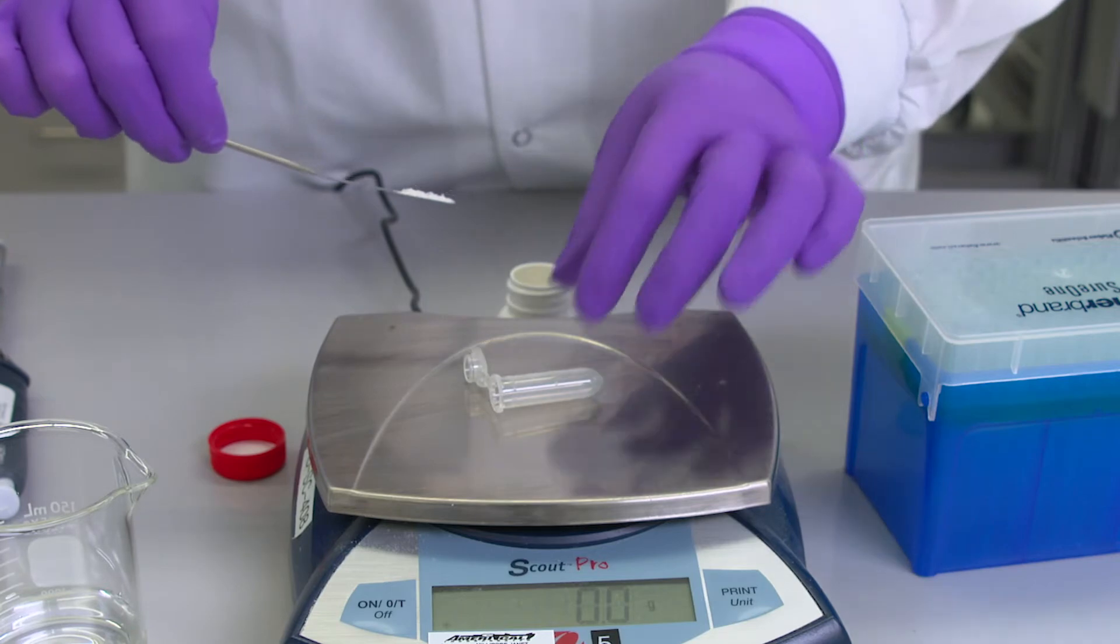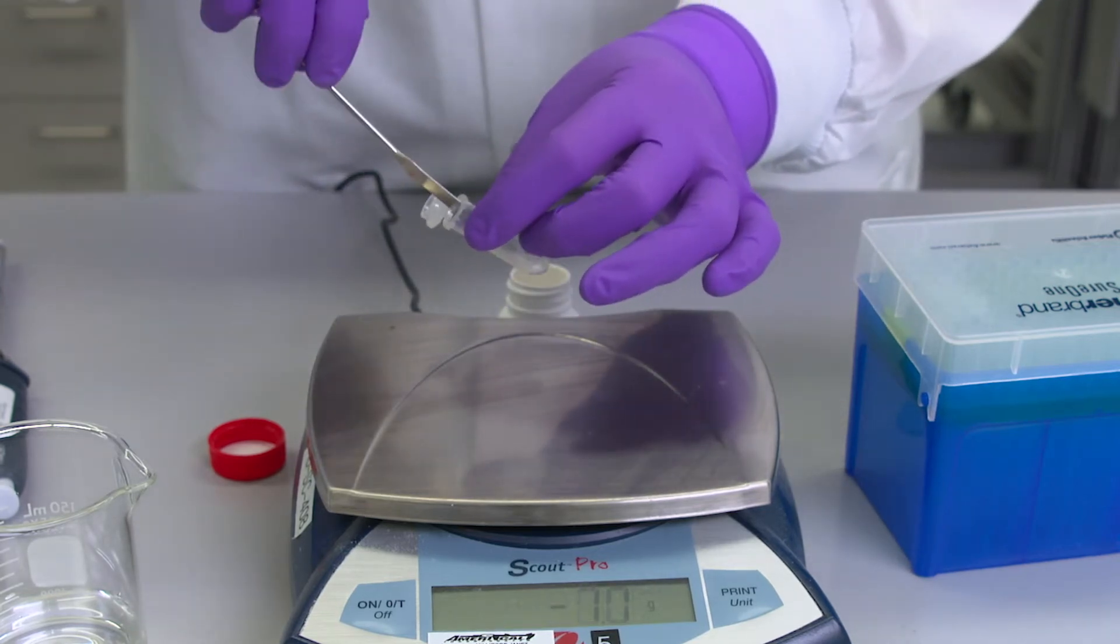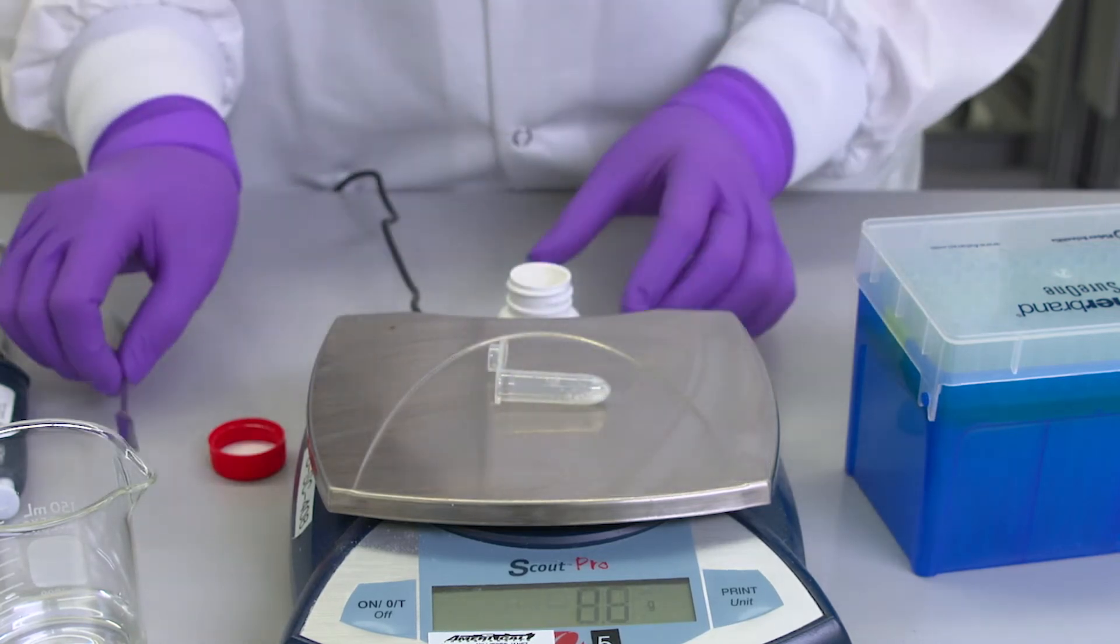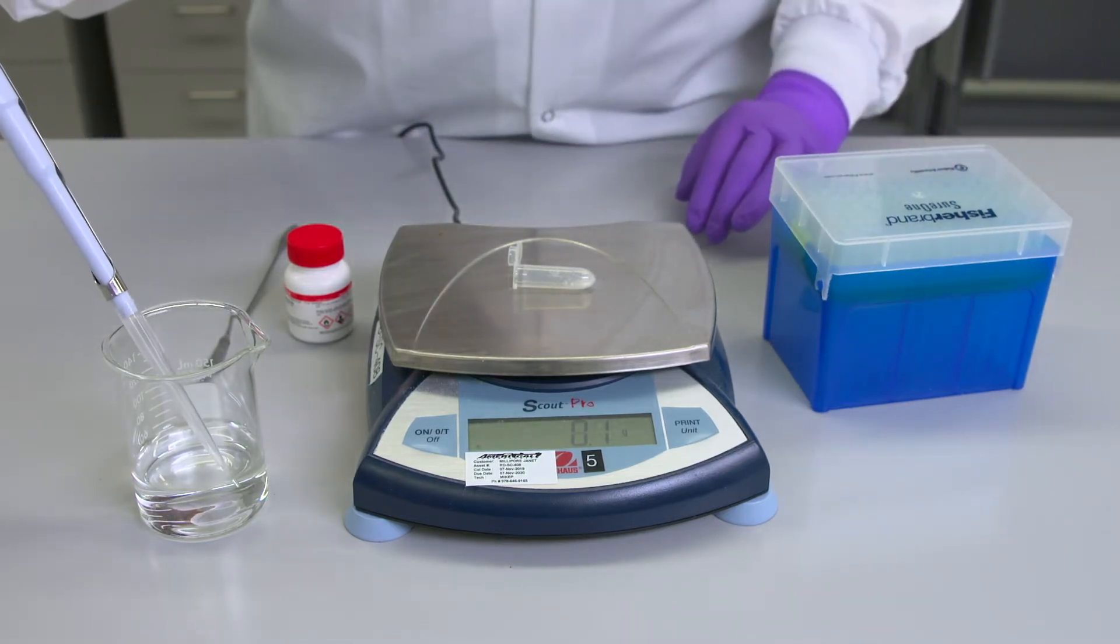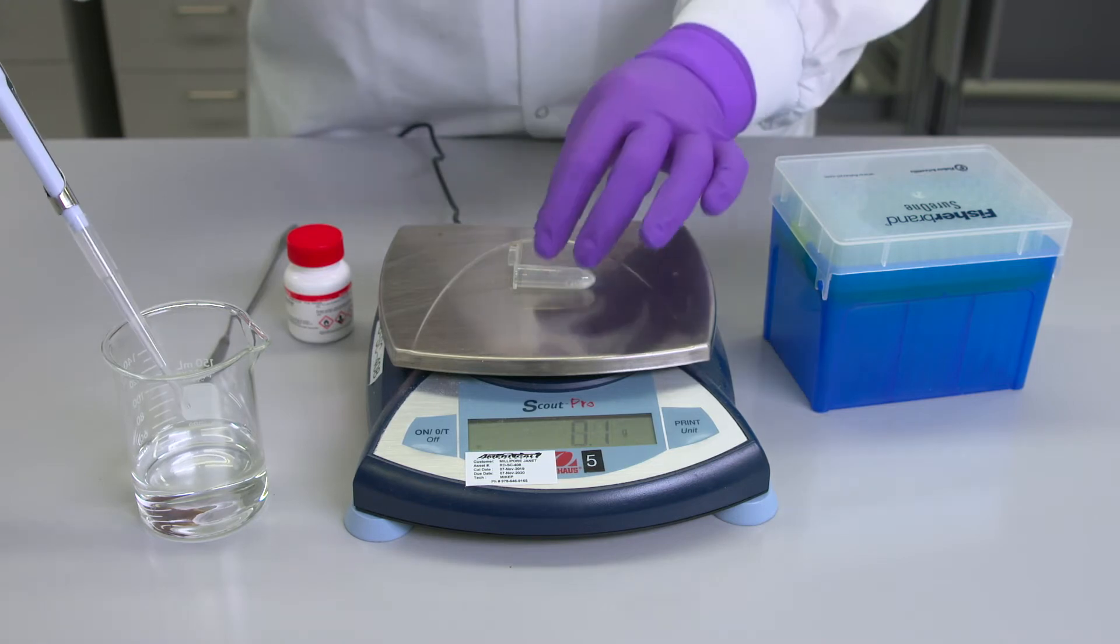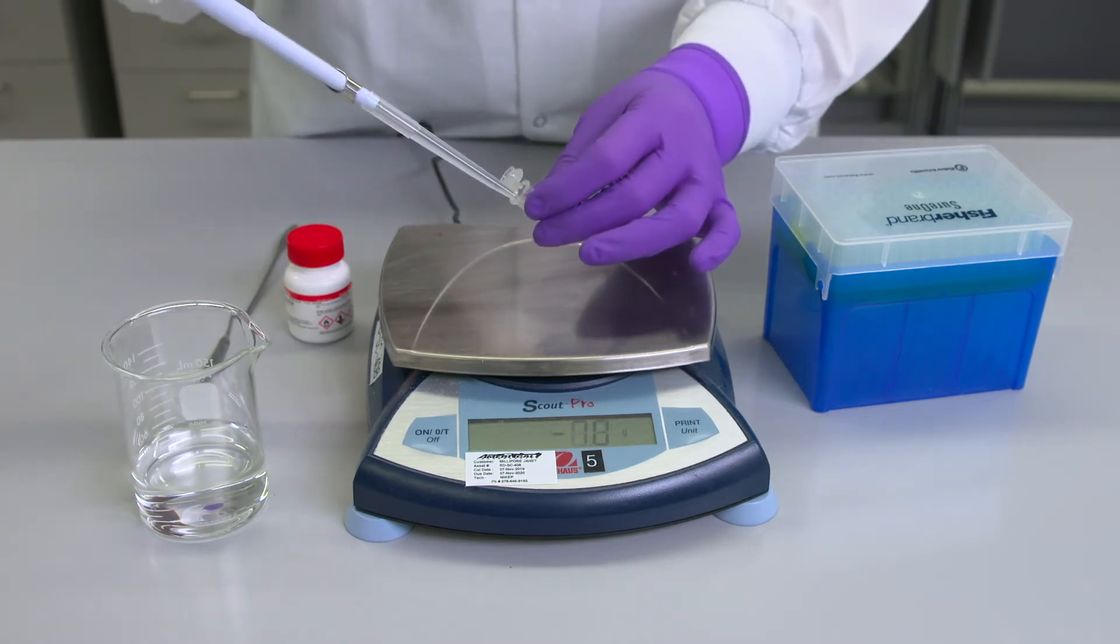Next, I'll prepare a fresh 10% APS solution. APS, in combination with TMED, initiates and accelerates acrylamide polymerization. The 10% APS can be made fresh before each use or can be aliquoted and stored at minus 20 Celsius.